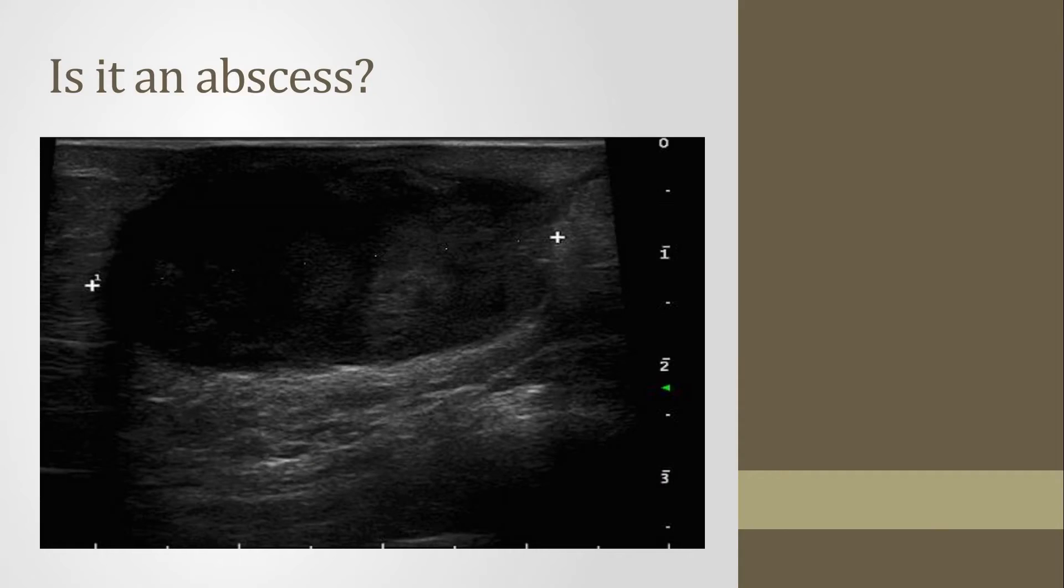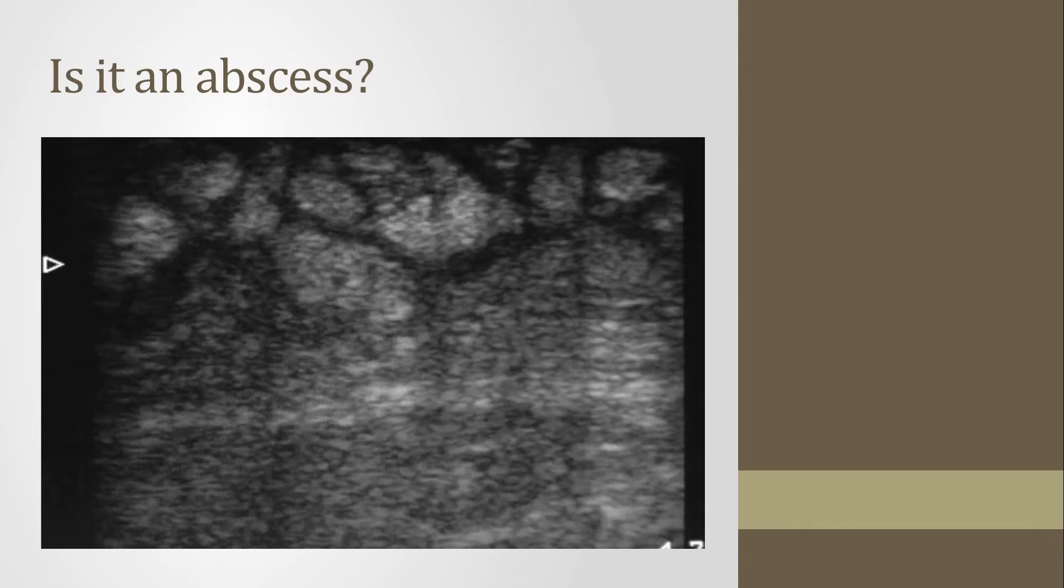This is what they defined as an abscess on ultrasound: an anechoic or hypoechoic structure with poorly defined borders, usually spherical in shape, although it doesn't have to be, with a variable amount of internal echoes. This is an example of what they were looking for for cellulitis, marked primarily by a cobblestoning appearance.